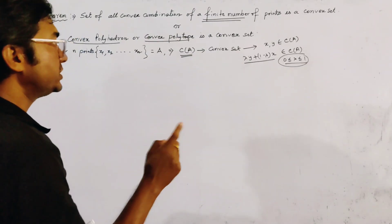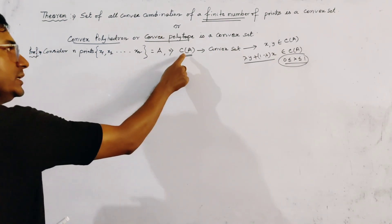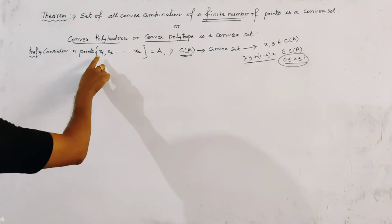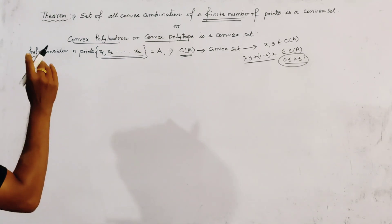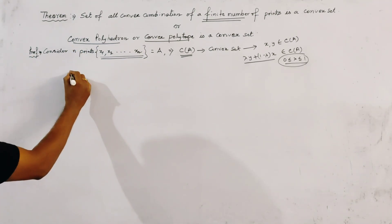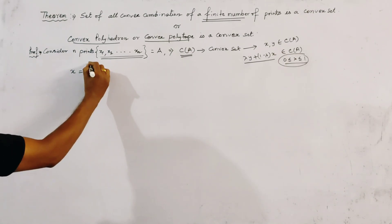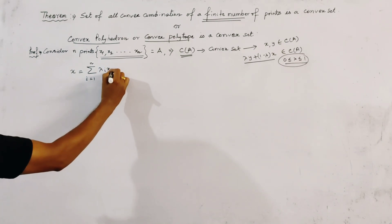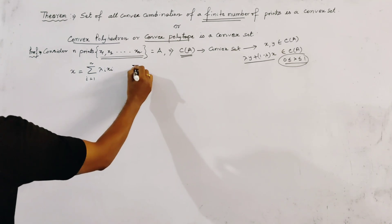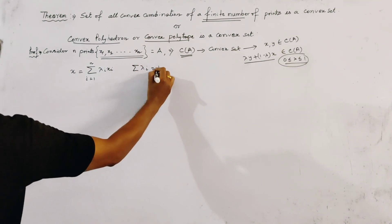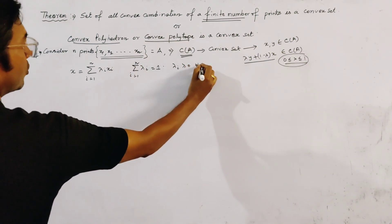Now we see what type of points are in C of A. In C of A, the points are convex combinations of all n points. Let any two such points be given as follows. The first point x equals summation i = 1 to n of λᵢ xᵢ. Since this is a convex combination, the condition is: summation of λᵢ equals 1 for i = 1 to n, and all λᵢ ≥ 0 for all i.